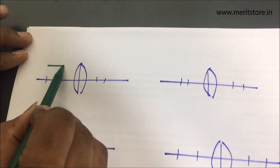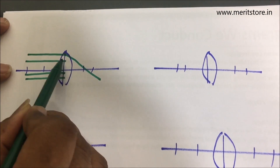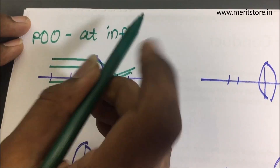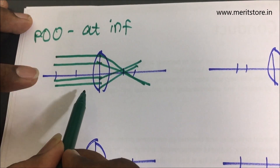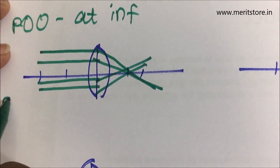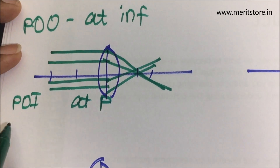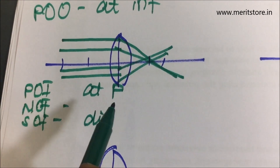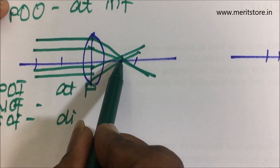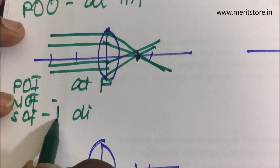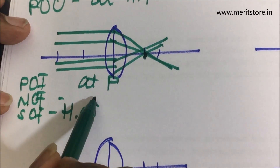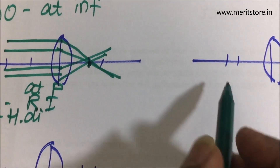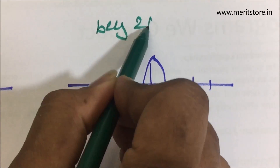Let's recap all six cases. First: when rays come from infinity, they meet at the focus — image is at focus, real, inverted, and highly diminished. Second: object beyond 2f1 — the first ray comes from the focus, goes through the optical center, and the image forms between f2 and 2f2, real, inverted, and diminished.